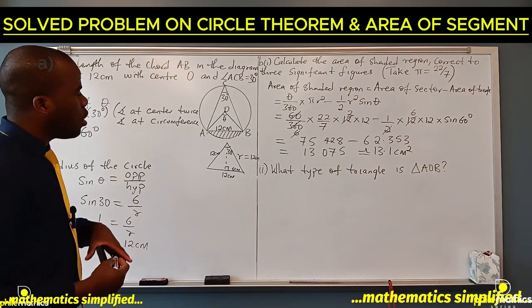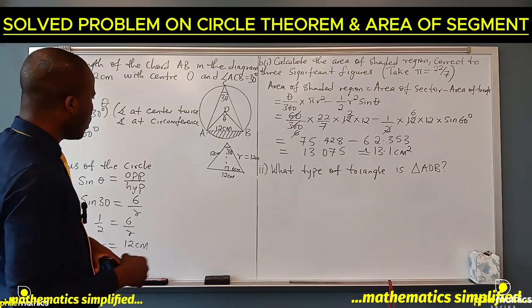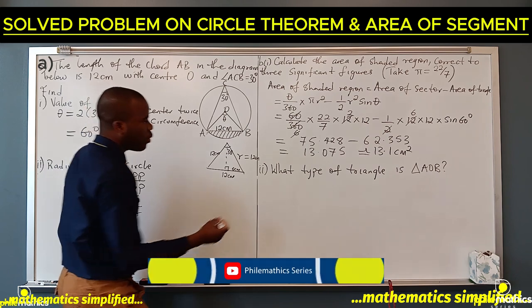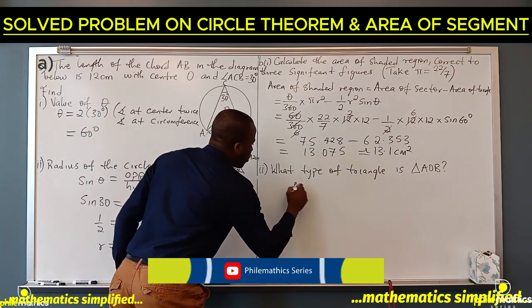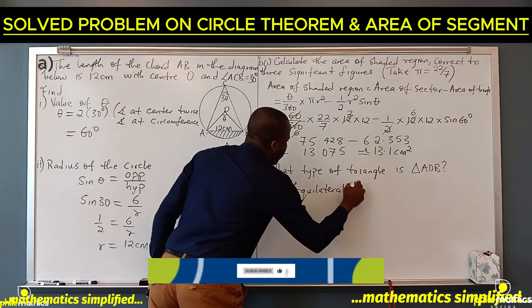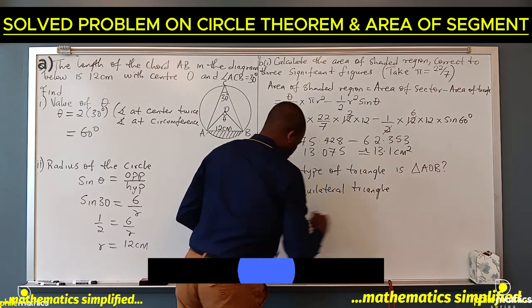This second problem says what type of triangle is this? Since the base is 12 cm and the radii are 12 cm, this is an equilateral triangle.